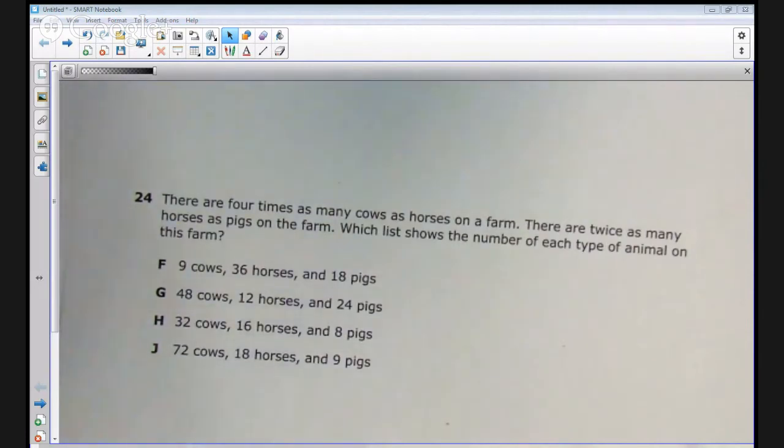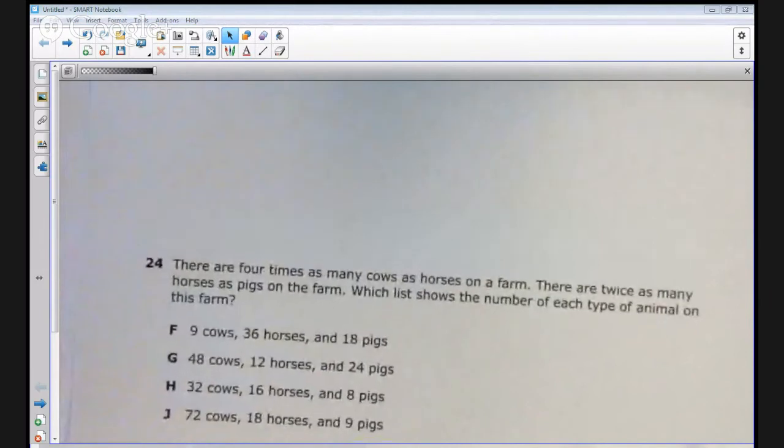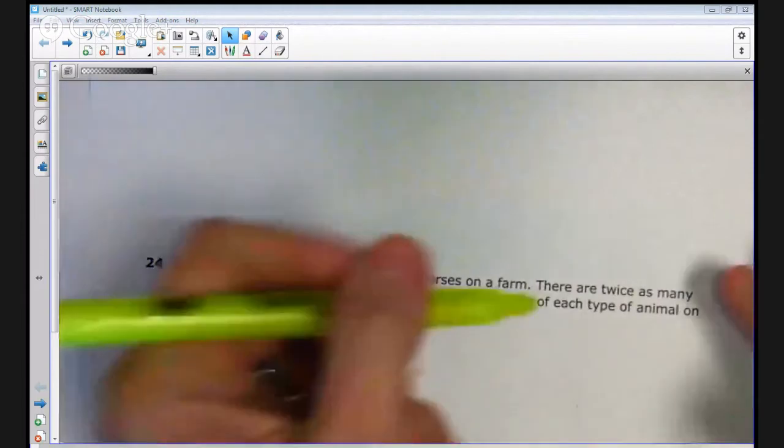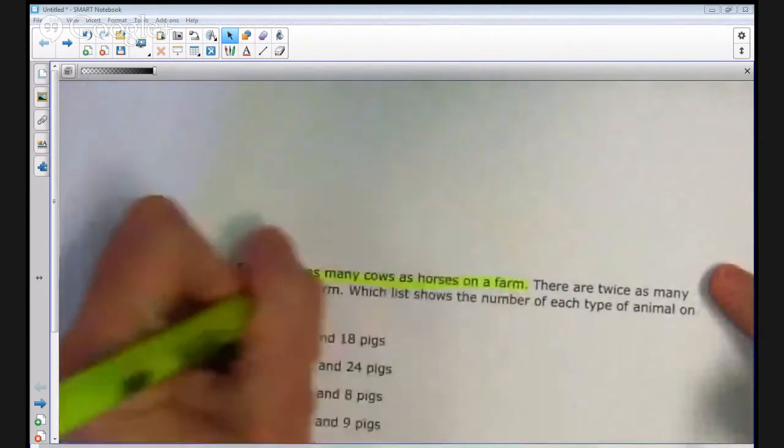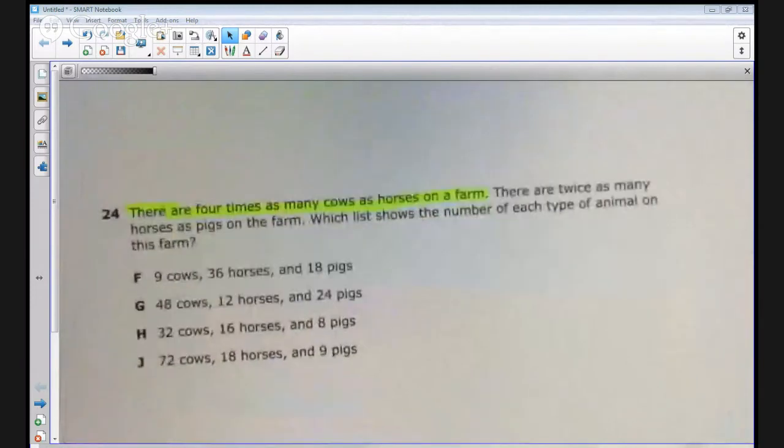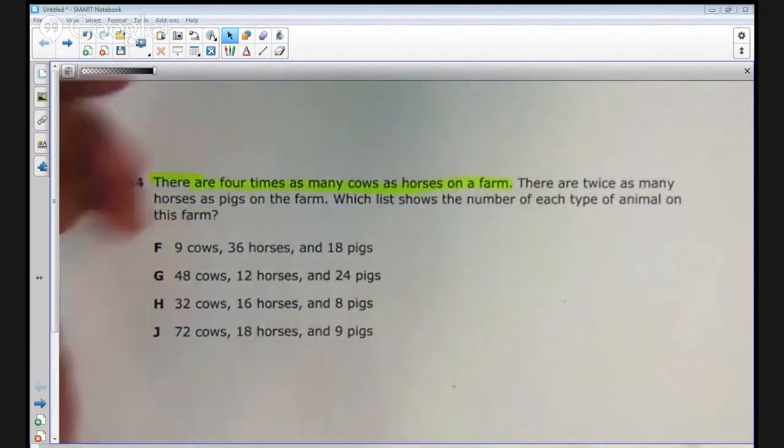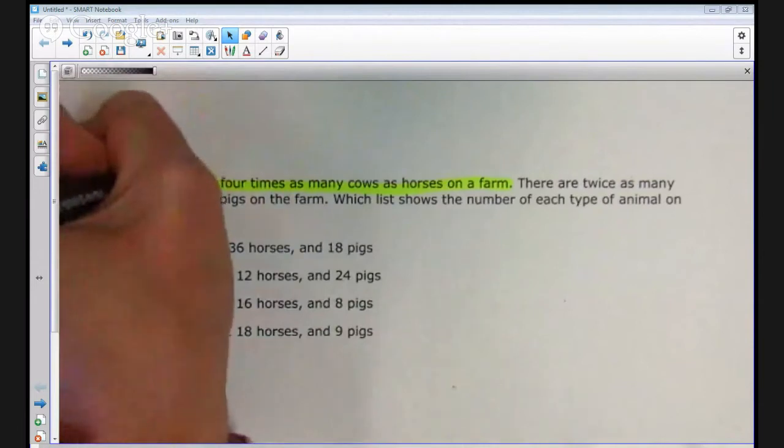Let's look a little closer at the item and see how the kids might work this one. First of all, it says there are four times as many cows as horses on a farm. Let's pause and highlight that statement. Four times as many cows as horses on a farm. Let's look at the answer choices without even considering the four at all. Let's just consider the statement there are four times as many cows as horses. And that means there are more cows than horses.